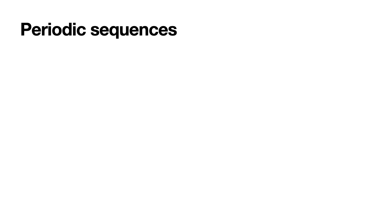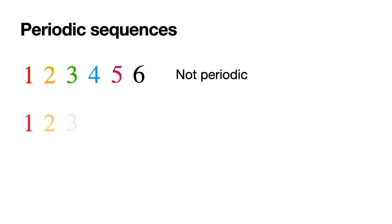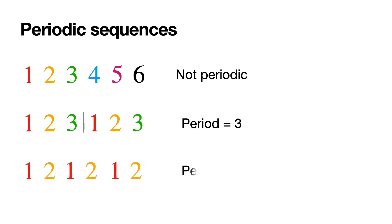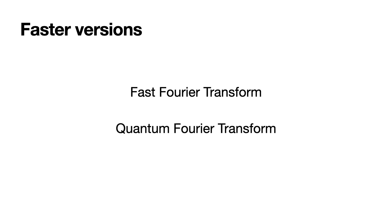There are a lot of uses for the DFT, and one very important one covered in the next video is detecting periodic sequences. For example, 1, 2, 3, 4, 5, 6 is not periodic, but 1, 2, 3, 1, 2, 3 is periodic with period 3, and 1, 2, 1, 2, 1, 2 is periodic with period 2. The DFT is very effective at detecting periodic sequences, which is crucial for Shor's algorithm — a quantum algorithm that breaks many cryptographic methods by factoring large numbers. Coming up are also faster versions of the DFT: the fast Fourier transform (FFT), and the quantum Fourier transform (QFT) computed on a quantum computer.